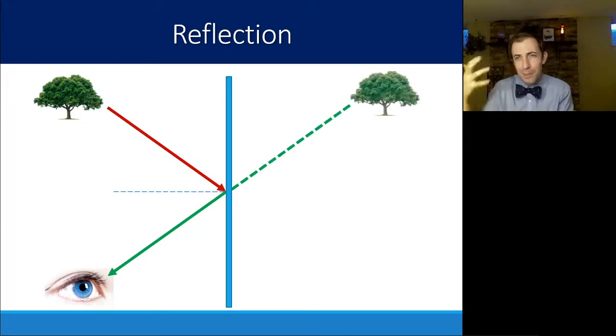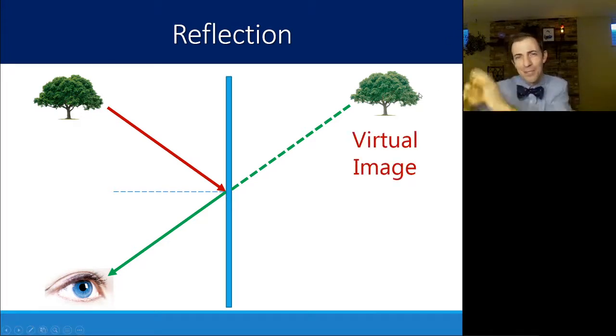But in reality, what your brain is interpreting is some image as if that light ray were coming straight the entire time, that it had not been interacted with, it didn't bounce, it didn't bend. And instead, the image that you see is known as a virtual image. It exists somewhere beyond the mirror.